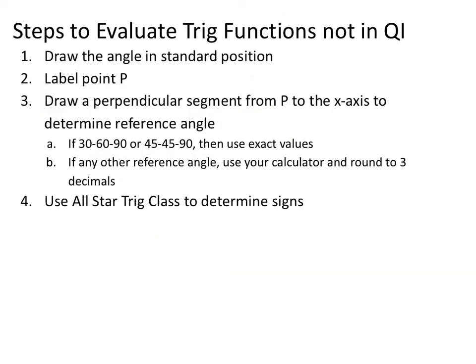Here are the steps: first, draw the angle in standard position to see which quadrant it's in. Second, find the reference angle by creating a reference triangle. Third, if it's a 30-60-90 or 45-45-90 triangle, use the hand trick for exact values; otherwise use a calculator. Finally, double-check sign positivity using 'All Star Trig Class' before giving your final answer.